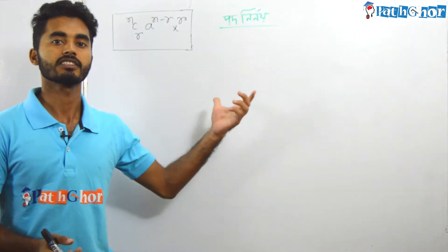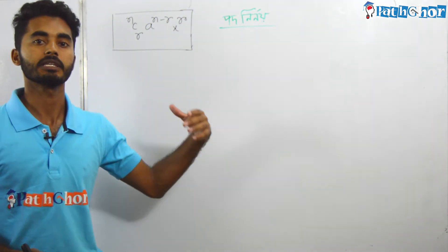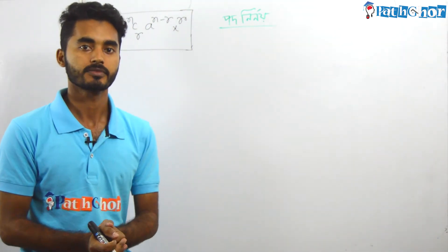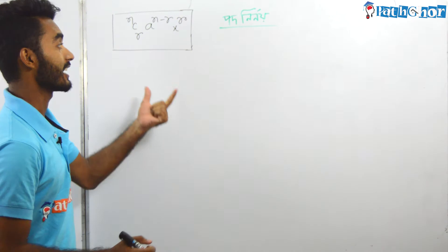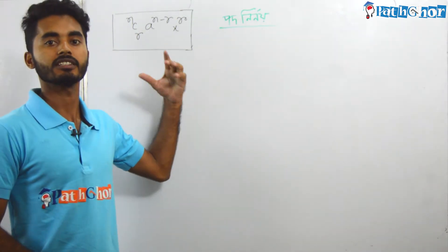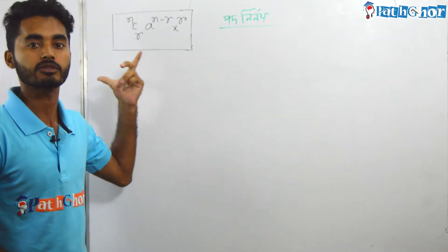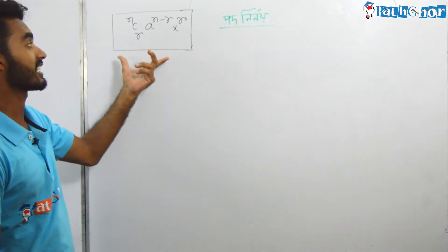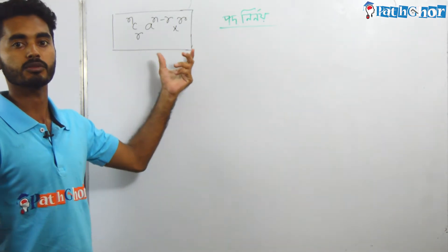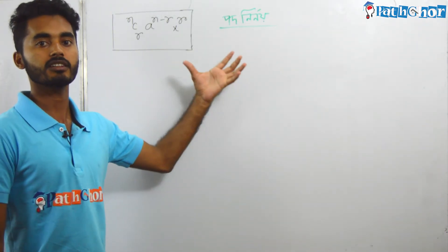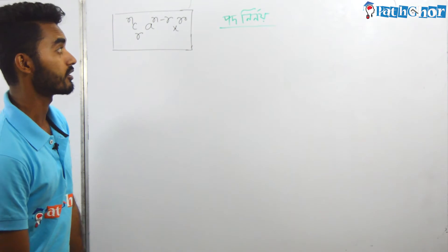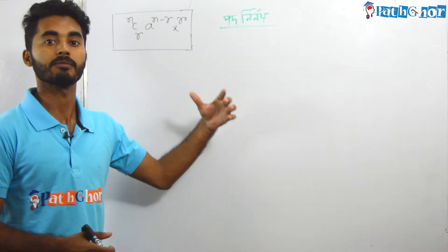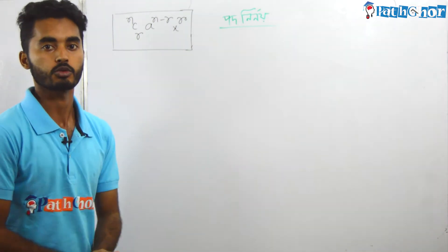I am ready to show you what kind of things you have to do, just follow them. The first thing is that x is the first one. The formula is: n C r, a to the power n minus r, x to the power r. Let me show you an example.